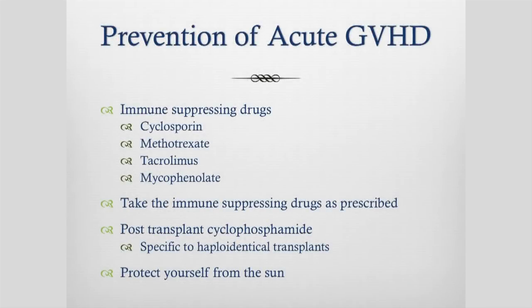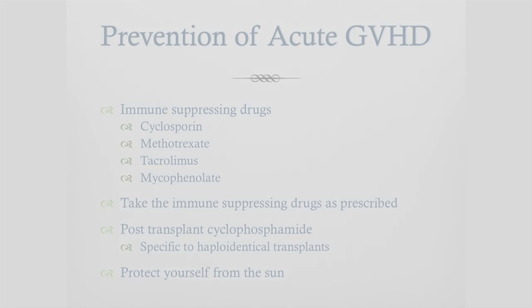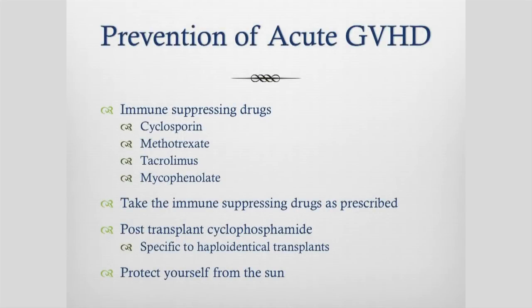For patients who have a haploidentical or half-matched stem cell transplant, having cyclophosphamide chemotherapy on days three and four after the transplant is one of the most important things we can do to prevent graft versus host disease. One of the most important things you can do is protect yourself from the sun. The sun in New Zealand is a bad guy anyway for melanoma, but if you've had a transplant it can cause skin graft versus host disease, so you need to slip, slop, slap and wrap and stay out of the heat of the sun.